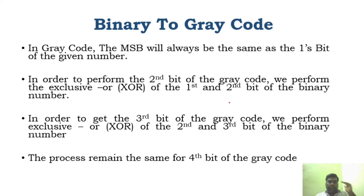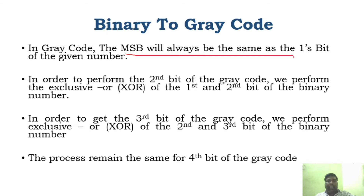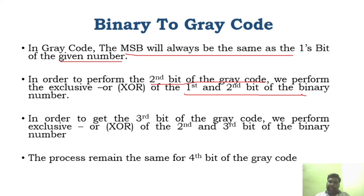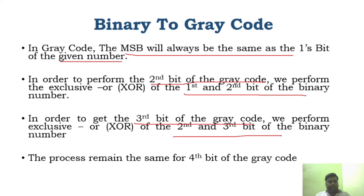These are the steps to follow when converting binary to grey code. First, the MSB — the first bit of the binary — will be the same for the grey code. Second, for the second grey code bit, you XOR the first and second bits of the binary. Similarly, for the third bit of the grey code, you XOR the second and third bits of the binary number, and so on.